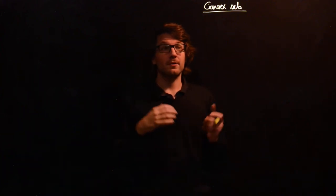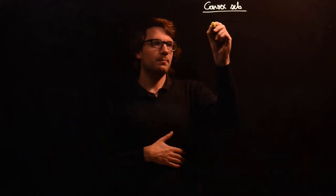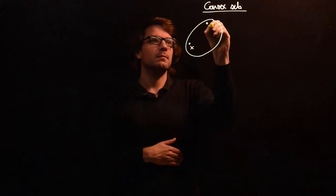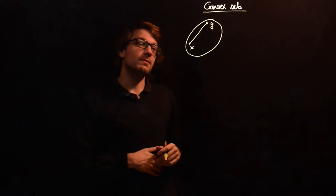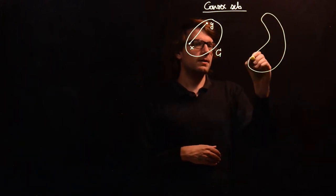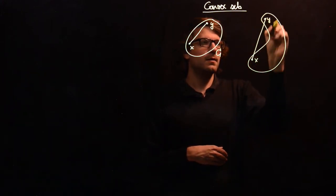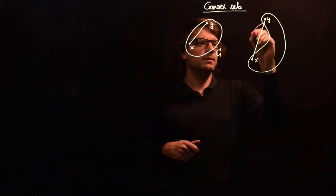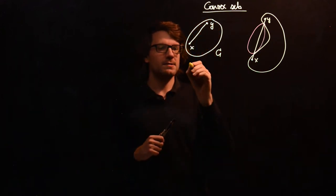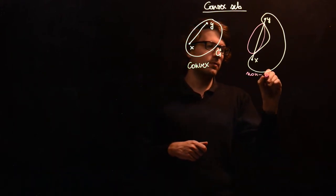Let's come to the formal definition of a convex set and give some examples. We can imagine a convex set as being shaped so that for any two points, the straight line between them is also in the set. In contrast, if the set is shaped differently, parts of the straight line between two points may not be in the set — making it non-convex.